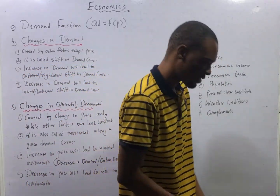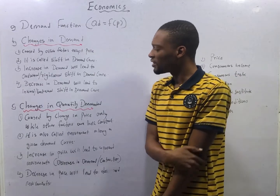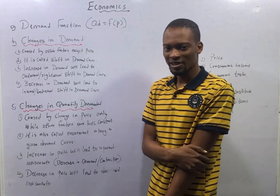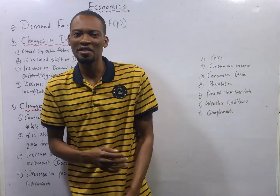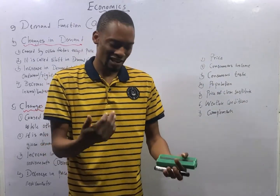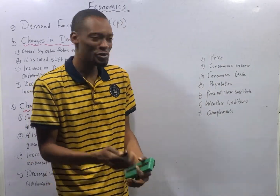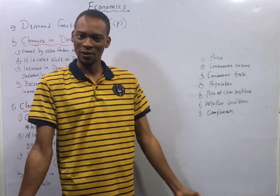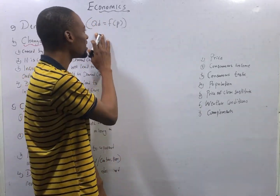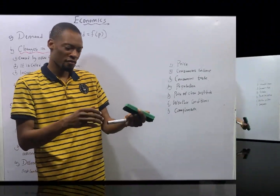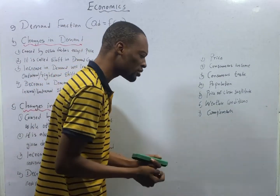If today you hear that Jumia is doing a discount — 60% off any food or bag you get — you'll see so many people rush it. That is because quantity demanded is a function of price.